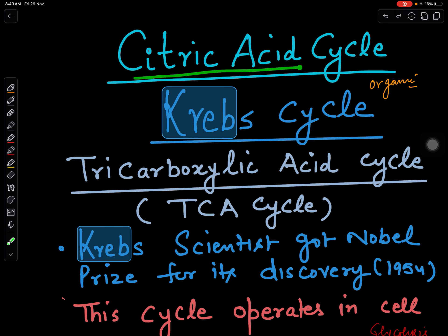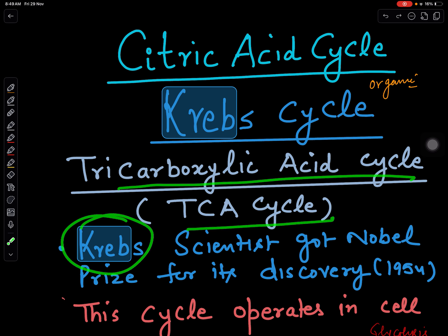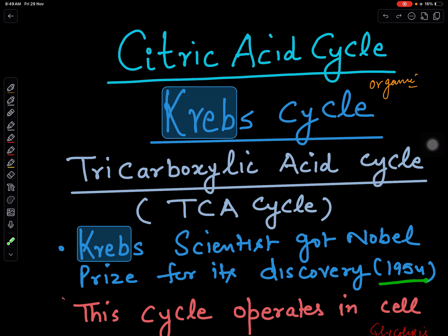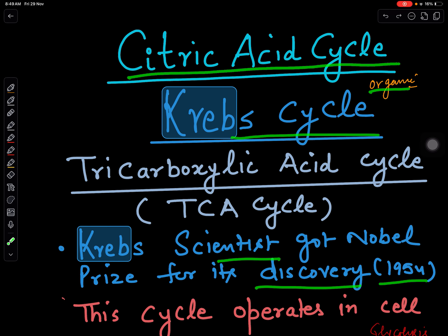Today we are going to study the citric acid cycle, also called the Krebs cycle, also called the tricarboxylic acid cycle or TCA cycle. This was discovered by scientist Krebs in 1954, and he also received the Nobel Prize for its discovery, so it is named the Krebs cycle. An organic acid, citric acid, is produced during the cycle, which is why it is called the citric acid cycle.